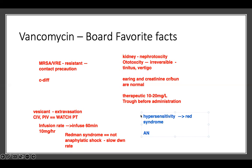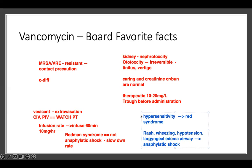If the patient develops rash, wheezing, hypotension, angioedema, or airway issues, then this is what we call anaphylactic shock — that's different from Red Man Syndrome. Red Man Syndrome is just a rash on the body with no airway issues, so you shouldn't confuse the two. Because the medication is a vesicant, it can extravasate. Observe the IV site every 30 minutes to make sure this doesn't happen.